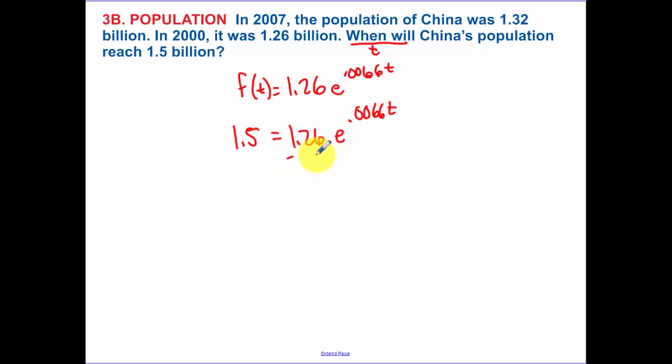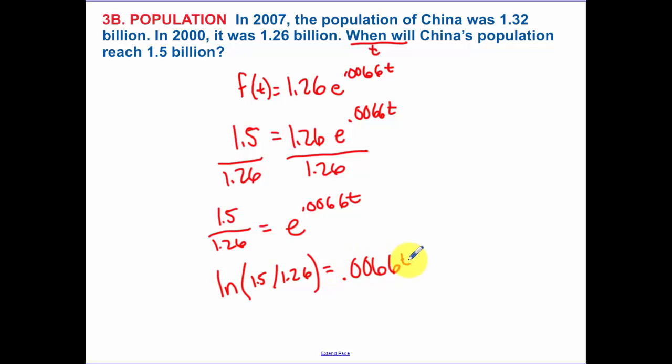I take and divide by 1.26. You have to isolate that exponential piece. So I have 1.5 divided by 1.26 equals e to the 0.0066t. Now writing that as a natural logarithm, the ln of 1.5 divided by 1.26, notice how I didn't find anything yet, equals 0.0066t. I divide by that.